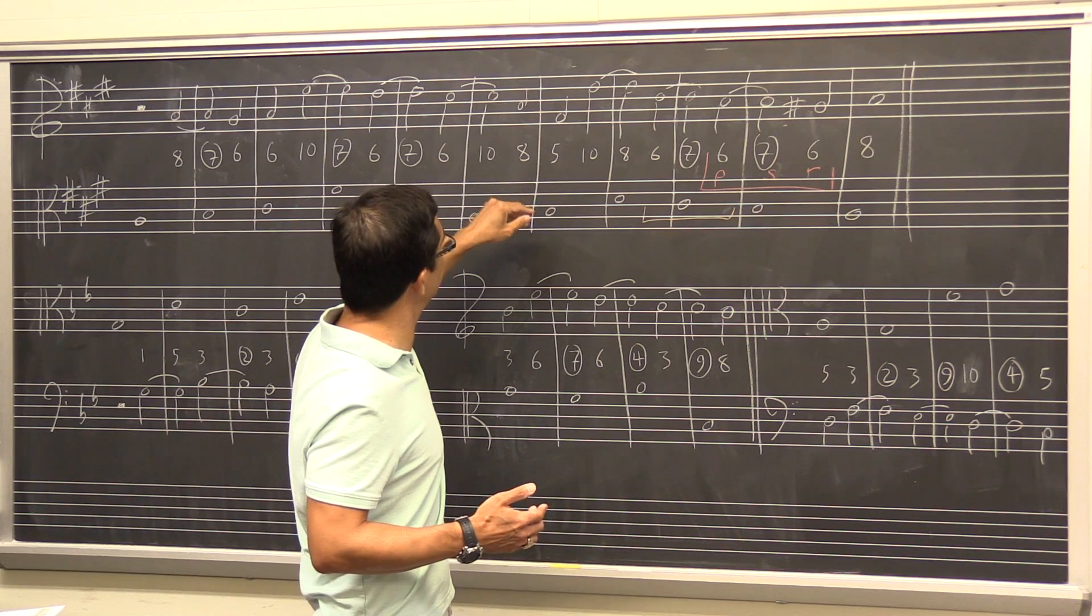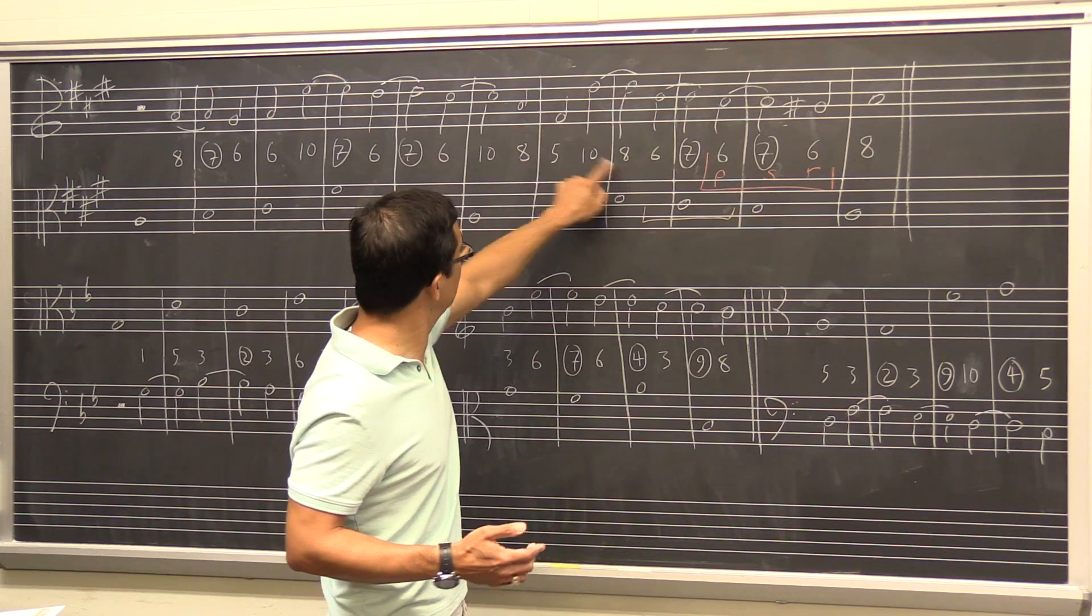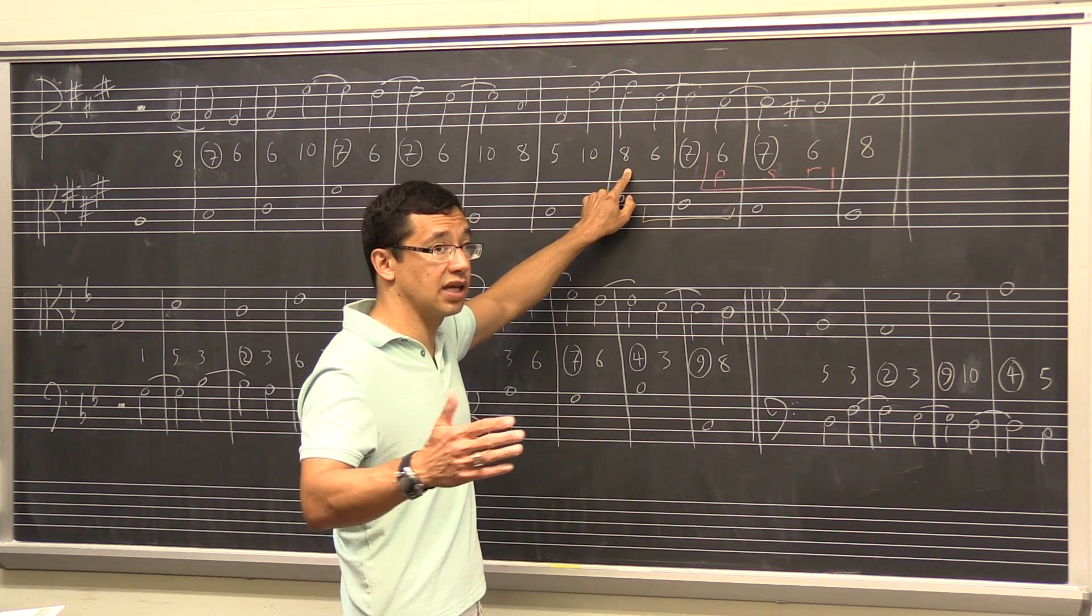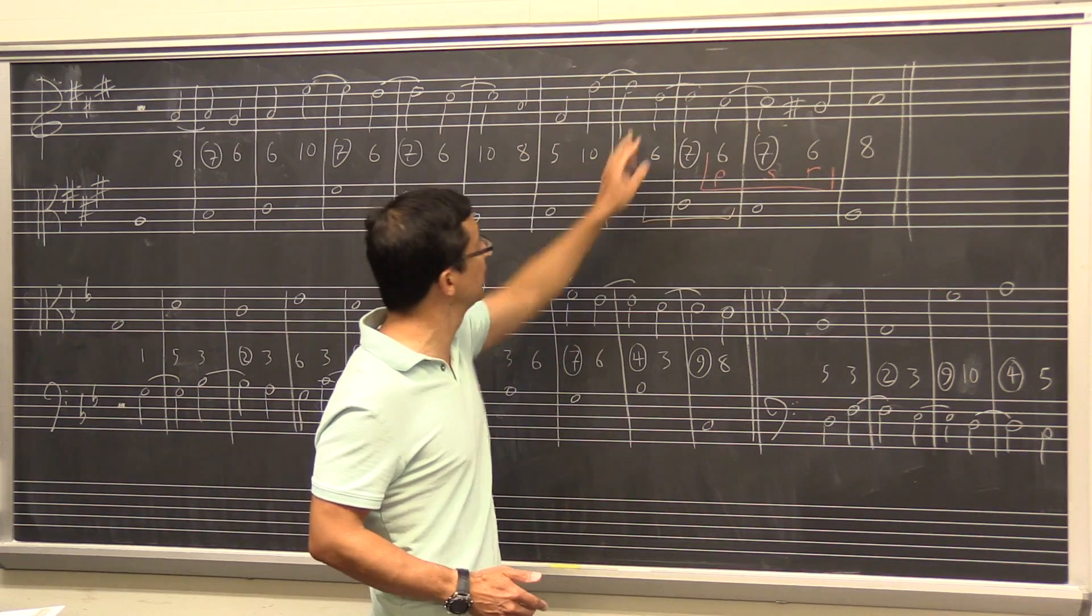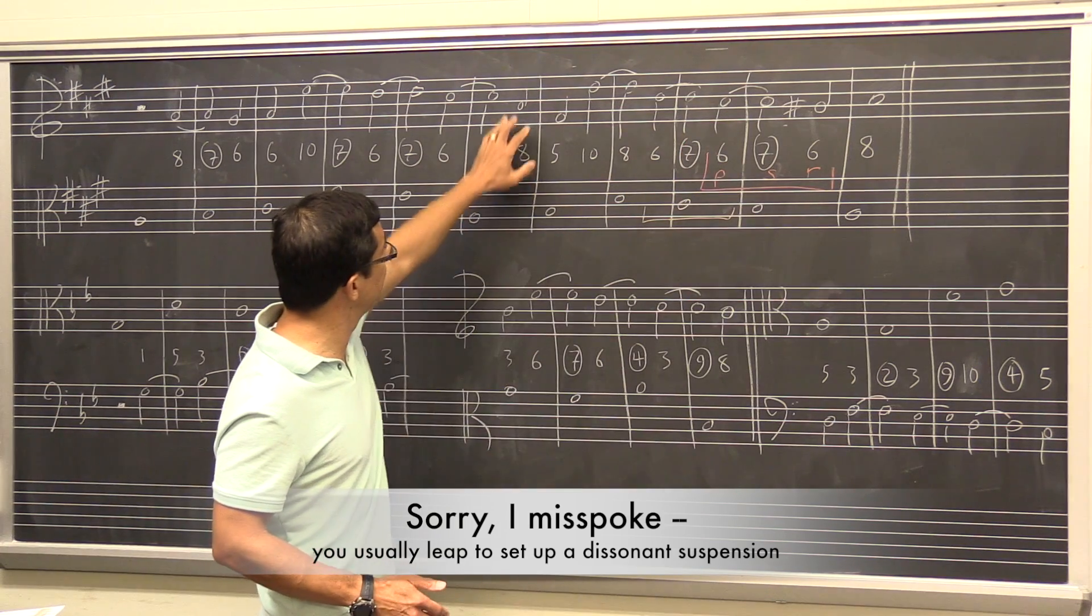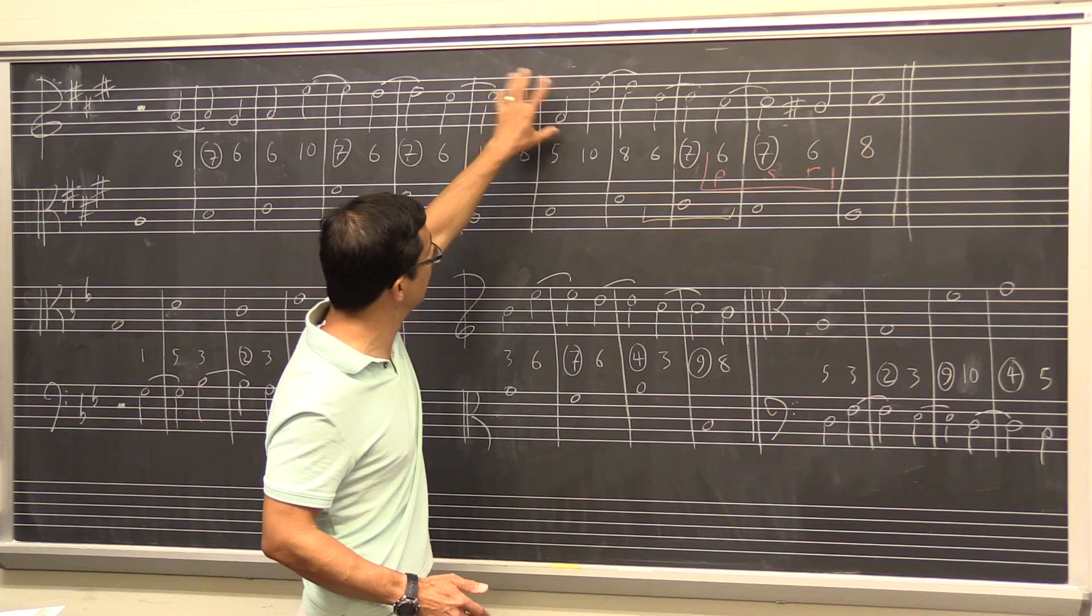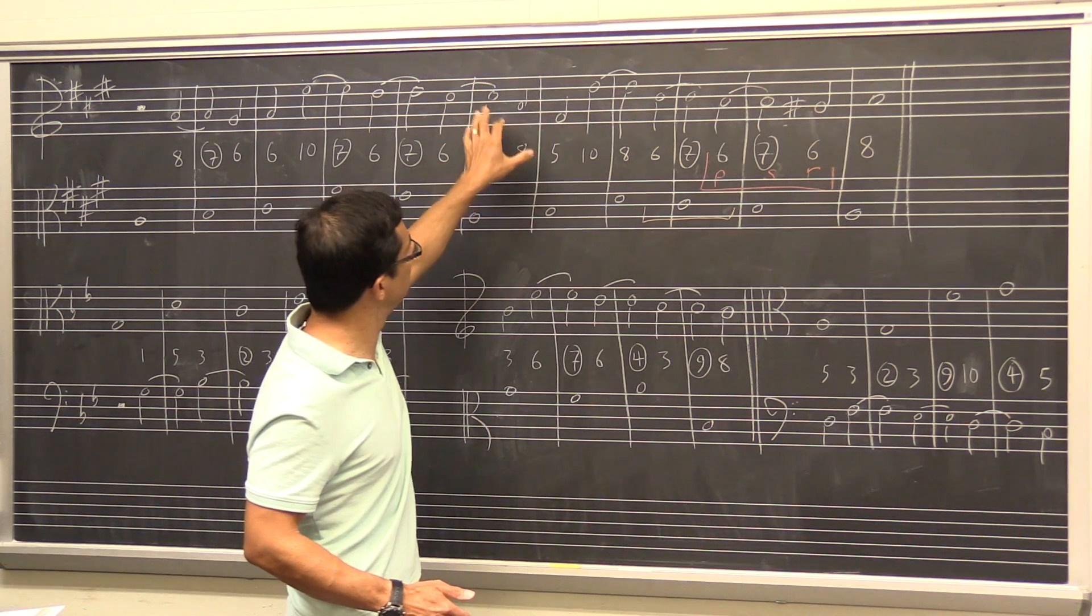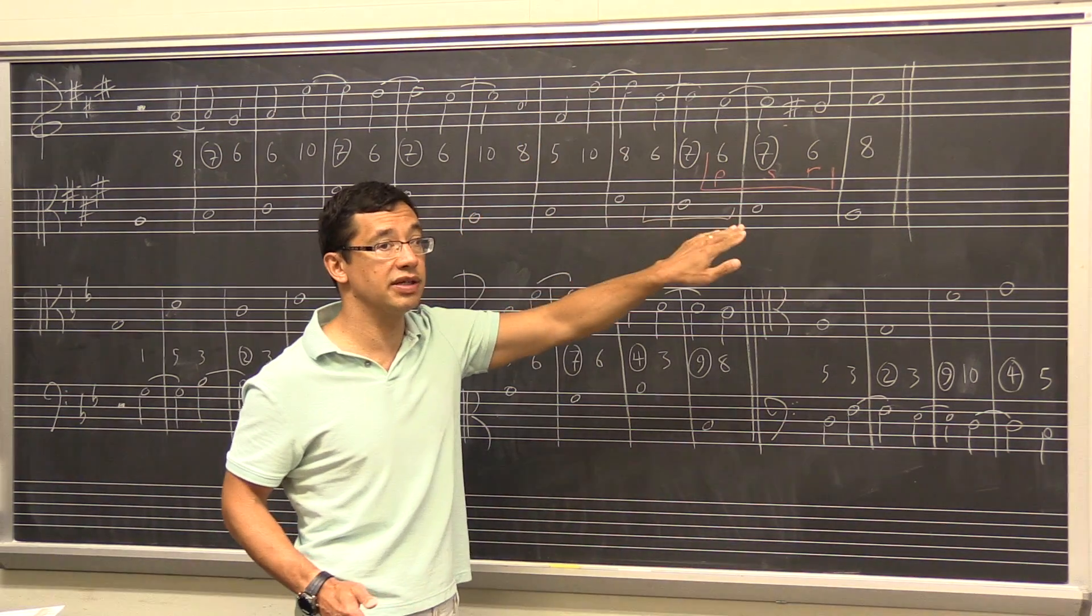The nice thing about this is because we land on a consonance on the downbeat, there is no obligation. Dissonance creates obligation. When you have consonance, you're free. And so you can leap to another consonance, usually to set up another consonant suspension. In this case, we need to kill some time because where we really want to go is there. So we get some downward range, break into second species for a bit before leaping up to continuing suspensions.